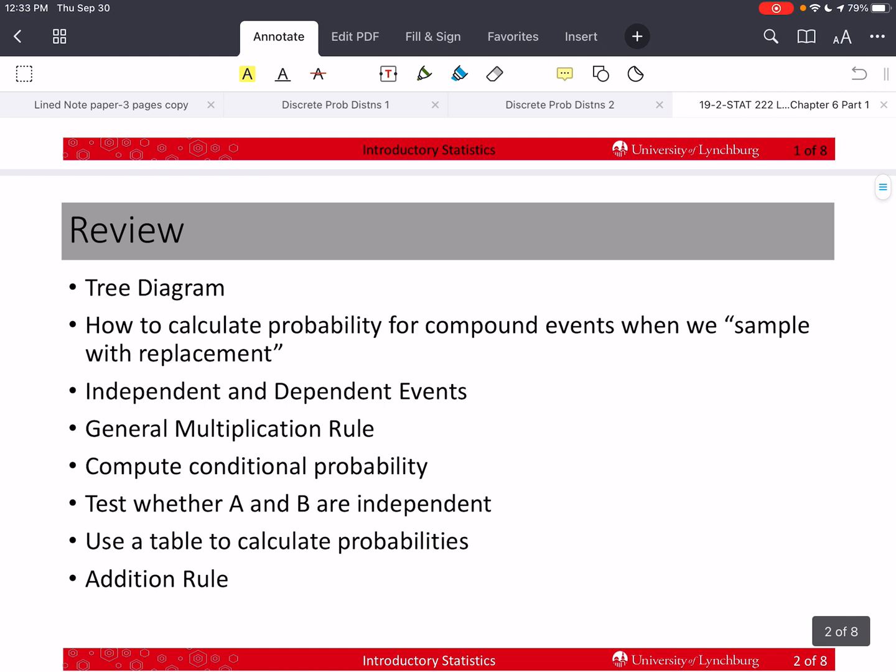Previously, we covered basic probability and talked about tree diagrams, sampling with and without replacement, independent and dependent events, the general multiplication rule, how to compute conditional probabilities, testing whether two events are independent, using a table to calculate probabilities, the addition rule, and how to do a little counting such as permutations and combinations.